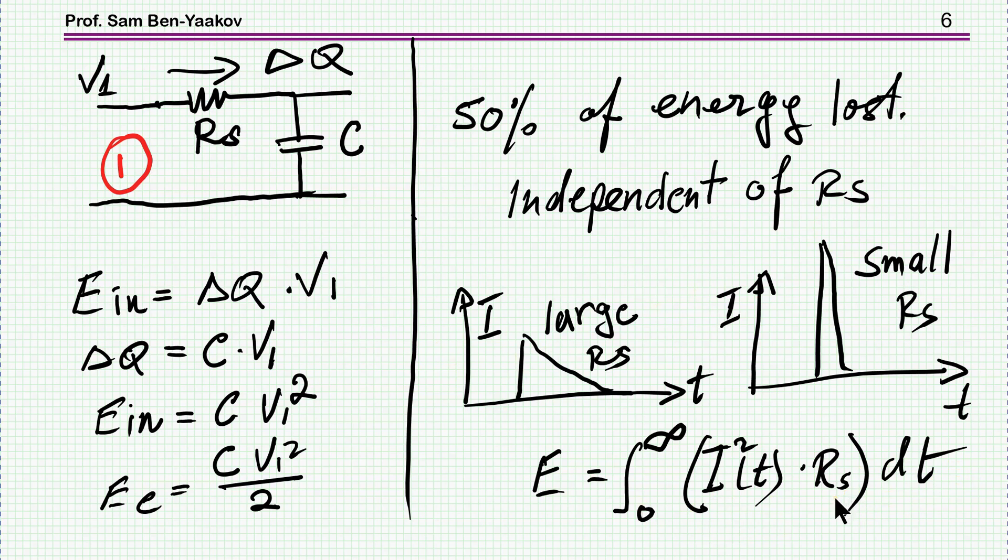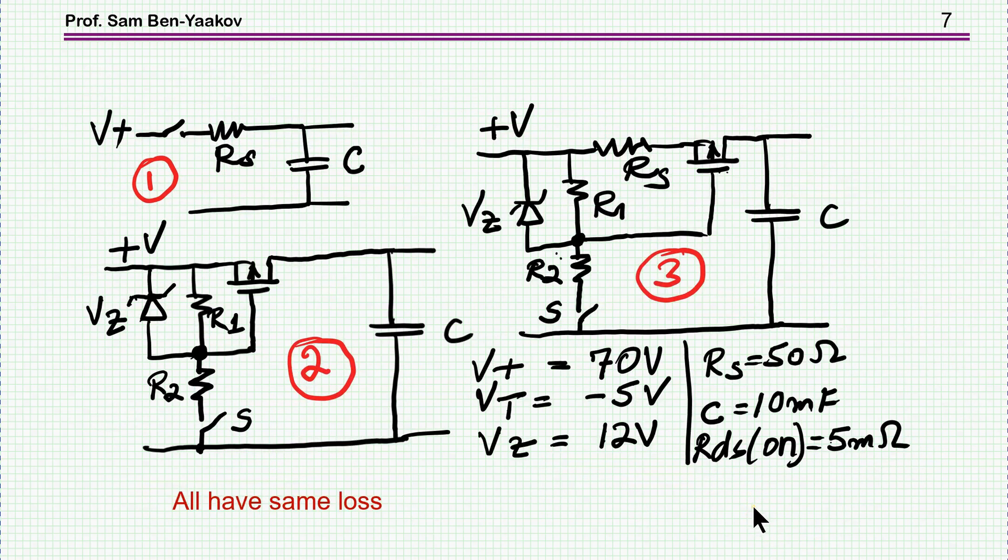It's interesting and kind of amazing. It's like one of those laws of nature. So we understand now that all these schemes here and here, which is sort of a resistor, will consume the same power or same energy when charging the capacitor. So they all have the same loss.